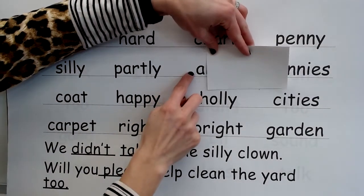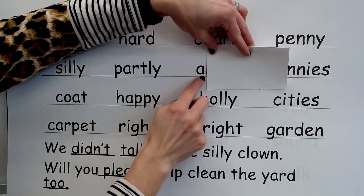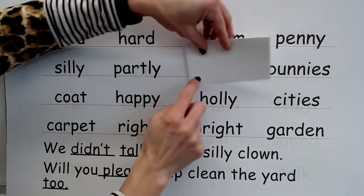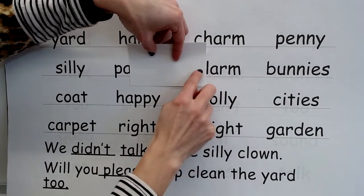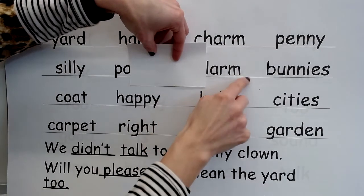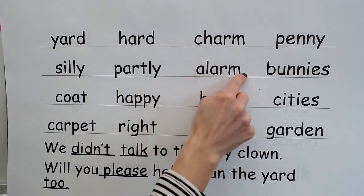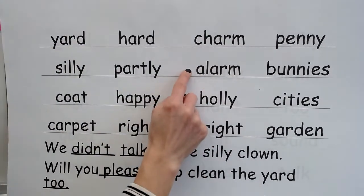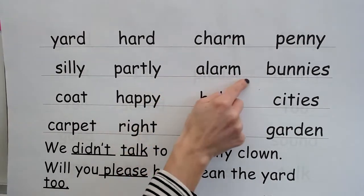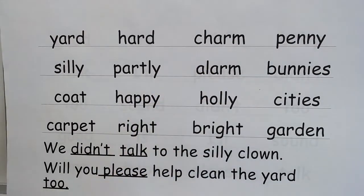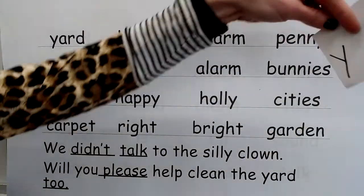Open syllable: sound — A; sound — R; syllable — alarm. Blend — a-larm. Word — alarm. Yes, alarm.